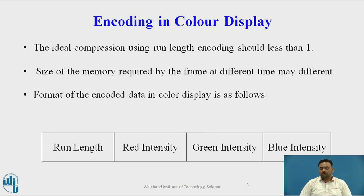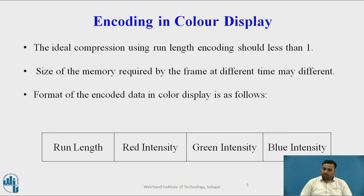Now we have seen monochromatic display; now we will talk about color display. In monochromatic display we just store whether a particular pixel is on or off, storing the starting and ending index values to display the image. But in color display, the pixel is on but of a different color — we have to display particular pixels on the scan line but they may hold different colors. So we have to differentiate between monochromatic and color display.